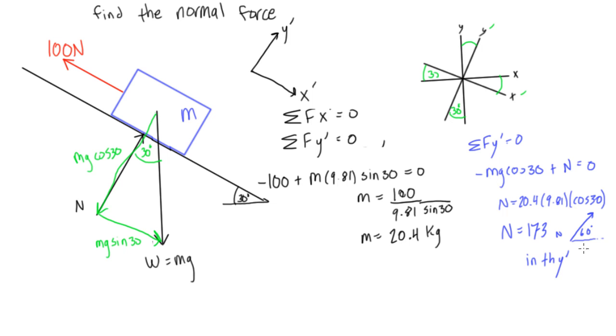Or you can just reference it to, or you could say in the y prime direction. However you want to answer that, but make sure that your teacher knows on your test that it's pointing in this direction. So if you want to write a regular x, y-axis, you can say it's pointing 60 degrees off the horizontal or it's just pointing in the y prime direction.